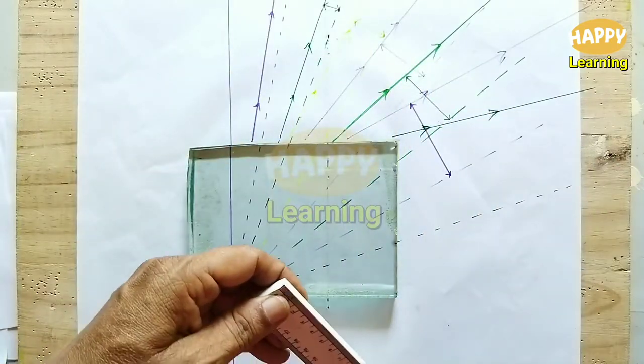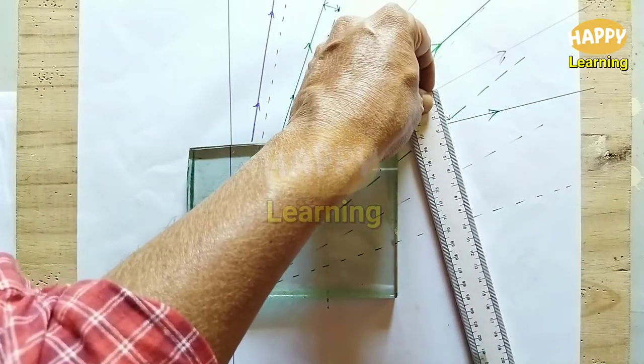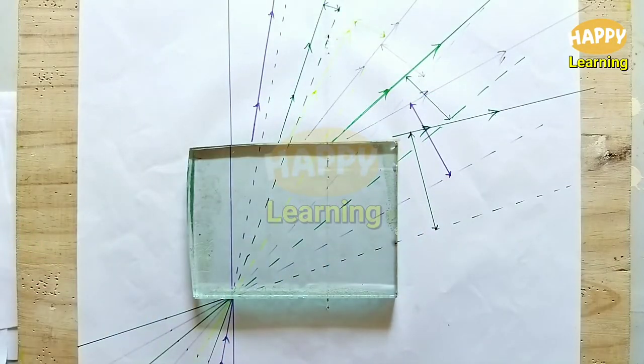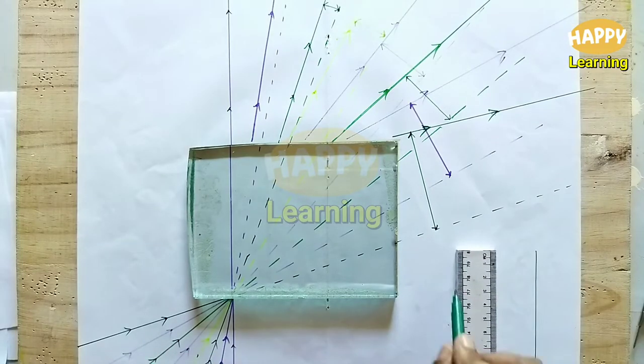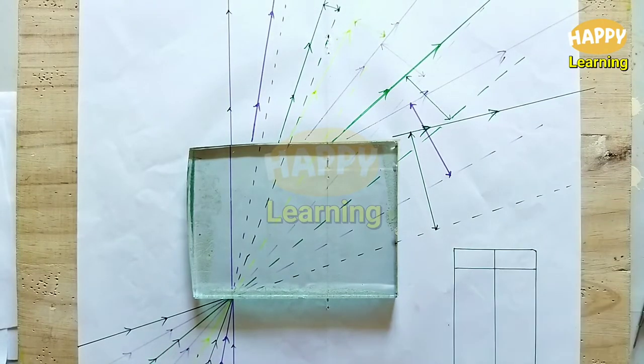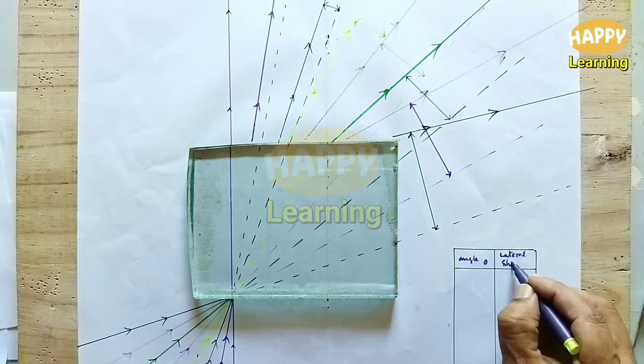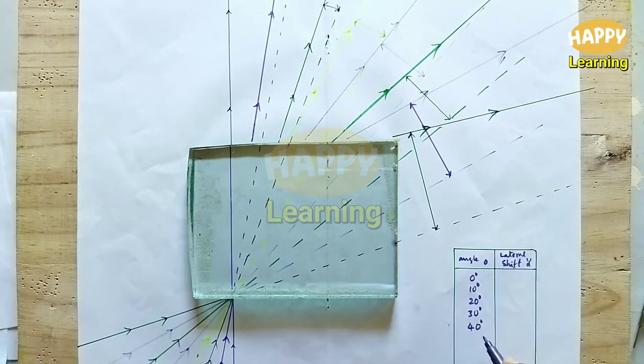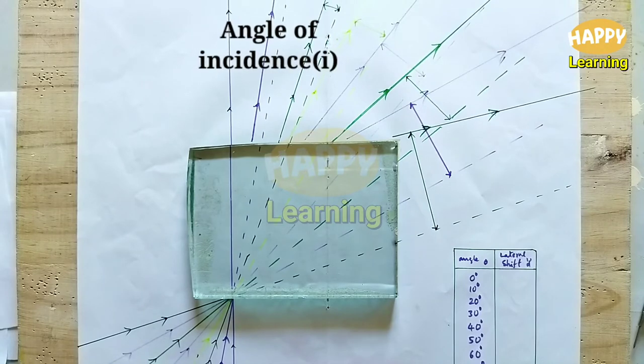So for different angles of incidence, we found the lateral shift. Now a table is drawn with angle of incidence i and the lateral shift d.